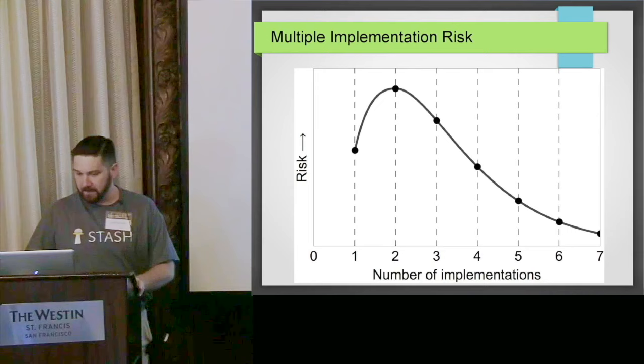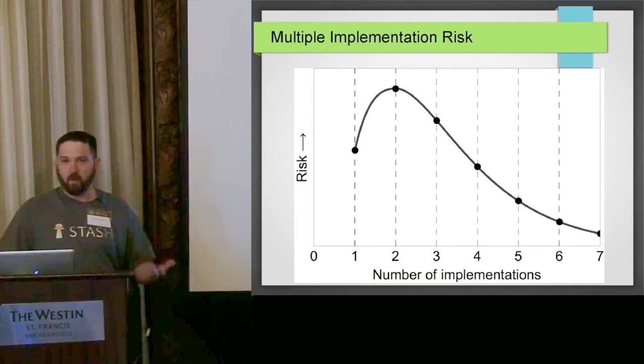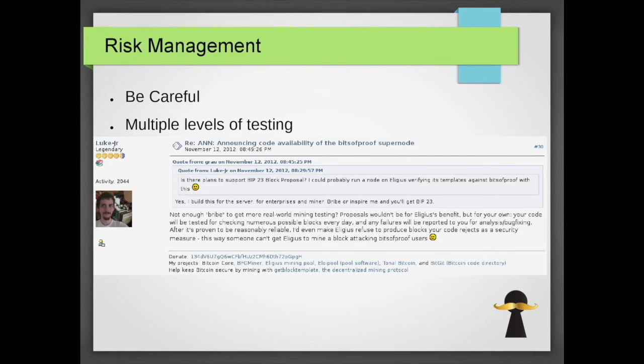There are ways to reduce the risk. What's been the standard in place since 2013 — since Bitcoin Core's major fork — was to just be really careful. Good software engineering practices and lots of testing — of course you have to do that. But I wanted to bring up a quote. This is from November 12th, 2012 — when the multiple implementation debate really, really heated up. You can look up this thread: it was announcing the code availability of BitsApproof Supernode.